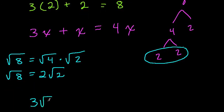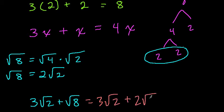We have 3 radical 2 plus radical 8. We couldn't really add these because radical 2 and radical 8 are different amounts, but now we have 3 radical 2 plus 2 radical 2. We rewrote the square root of 8.